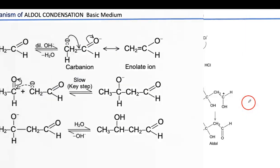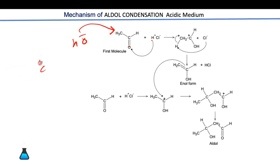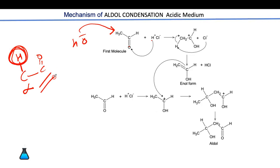In the acid-catalyzed mechanism, H⁺ attacks the carbonyl oxygen instead of OH⁻ removing the alpha hydrogen. In general, any carbonyl compound that has an alpha carbon with acidic hydrogen can undergo aldol condensation. In the presence of H⁺, the proton attacks the carbonyl compound and increases the enol content.